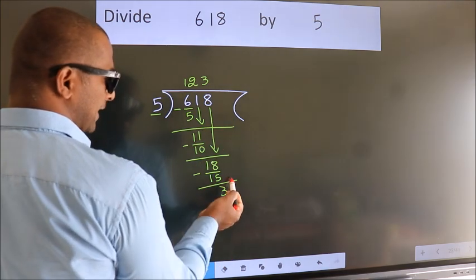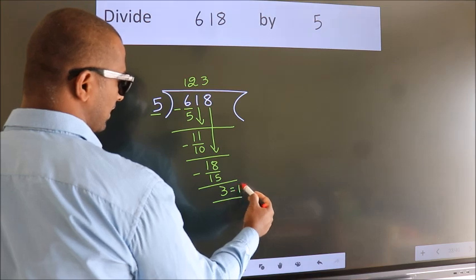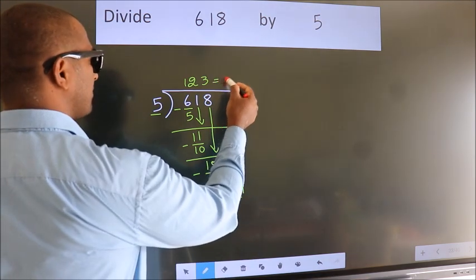No more numbers to bring down. So we stop here. This is our remainder. This is our quotient.